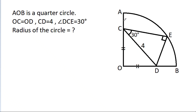We have been given that AOB is a quarter circle and OC is equal to OD, and CD is 4, and angle DCE is 30 degrees. We have to find the radius of the circle.